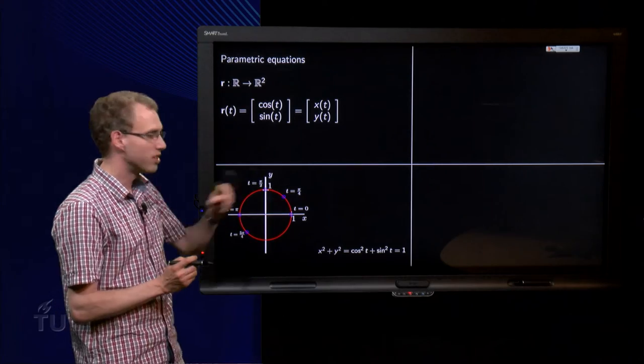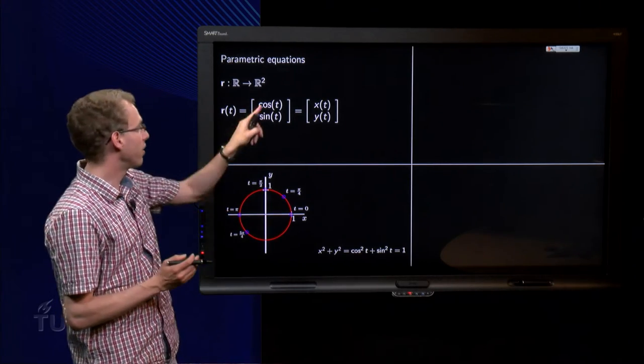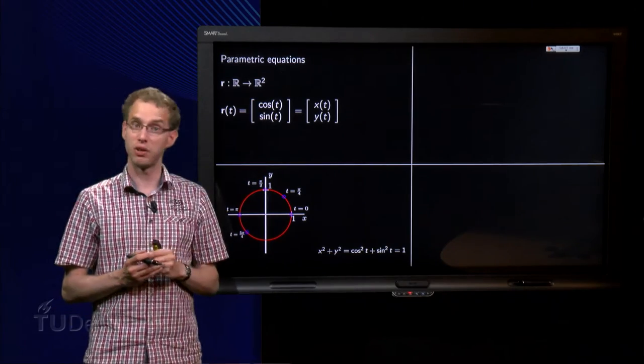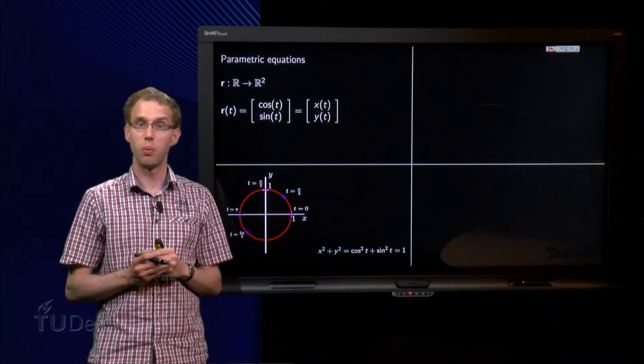So let's start with t equals 0. If t equals 0, we have x equals cos(0) equals 1, y equals sin(0) equals 0, and we have the point.